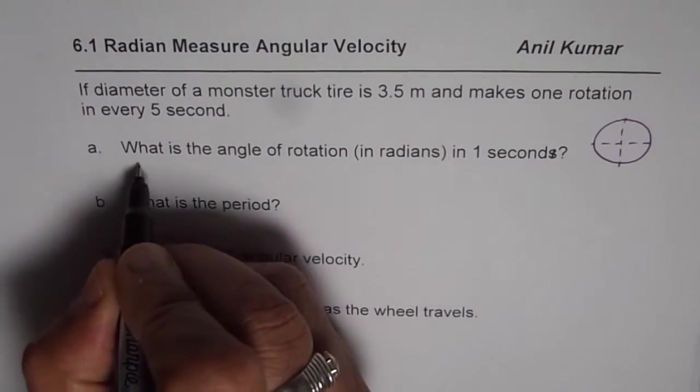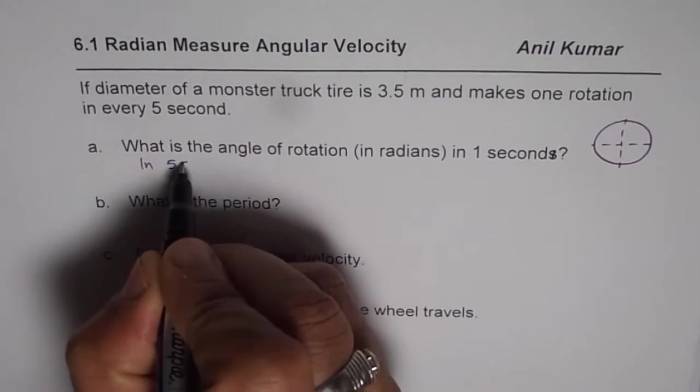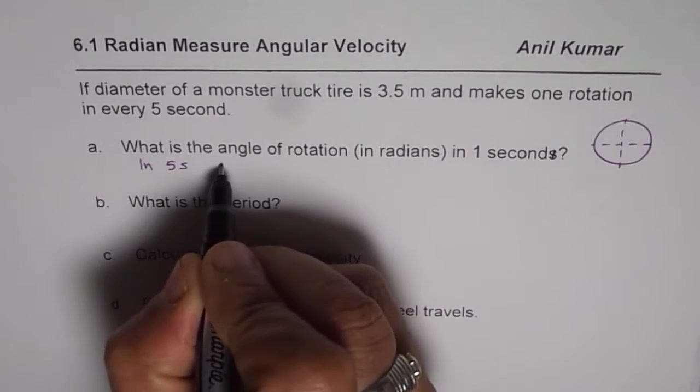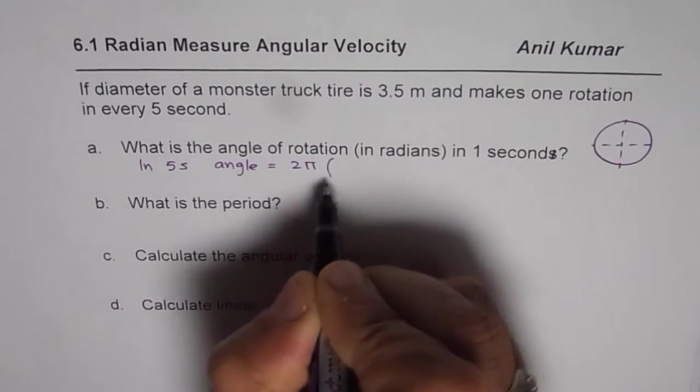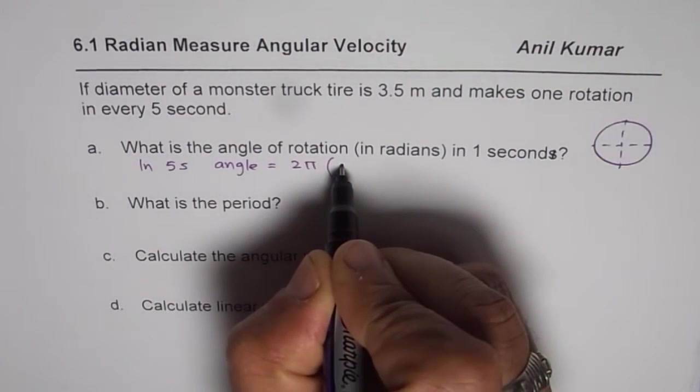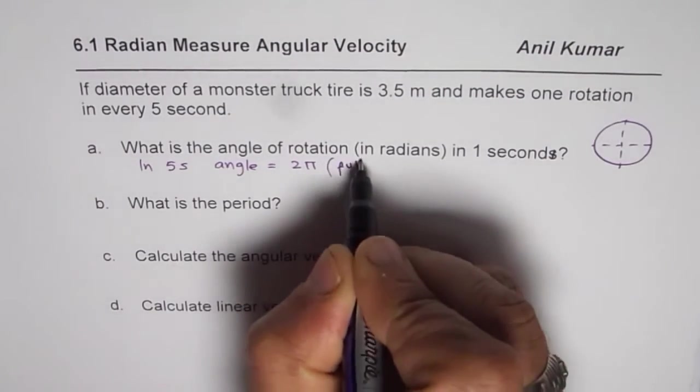So we say in five seconds, the angle is how much? We say angle is equals to 2 pi, right? Since 2 pi is one circle, full circle.